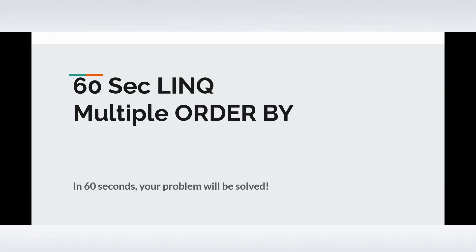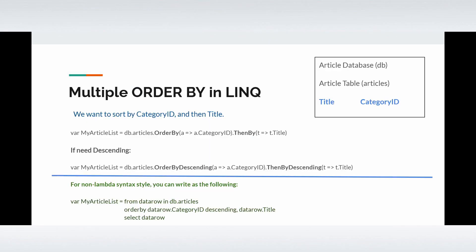In this 60-second tutorial on multiple ORDER BY in LINQ, assume we have a database called Article. In that database, we have an articles table with two columns: title and category ID. The goal is to demonstrate how to use multiple ORDER BY clauses in LINQ — specifically, to sort by category ID and then by title.